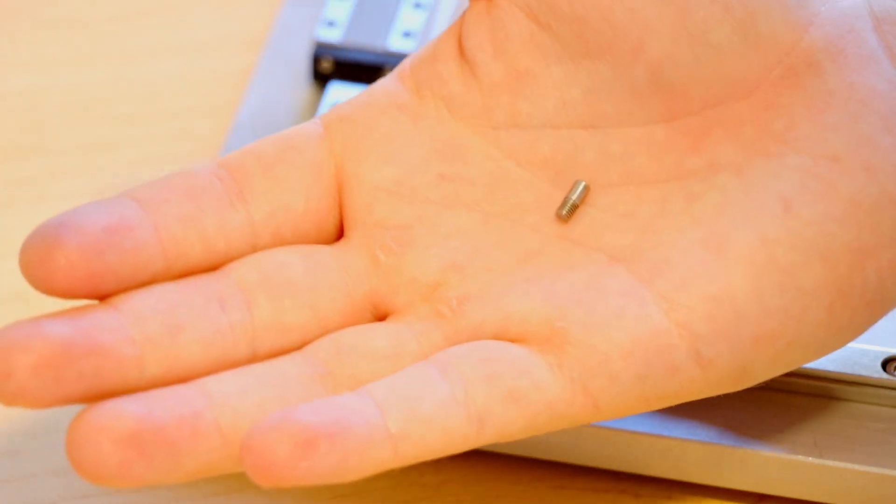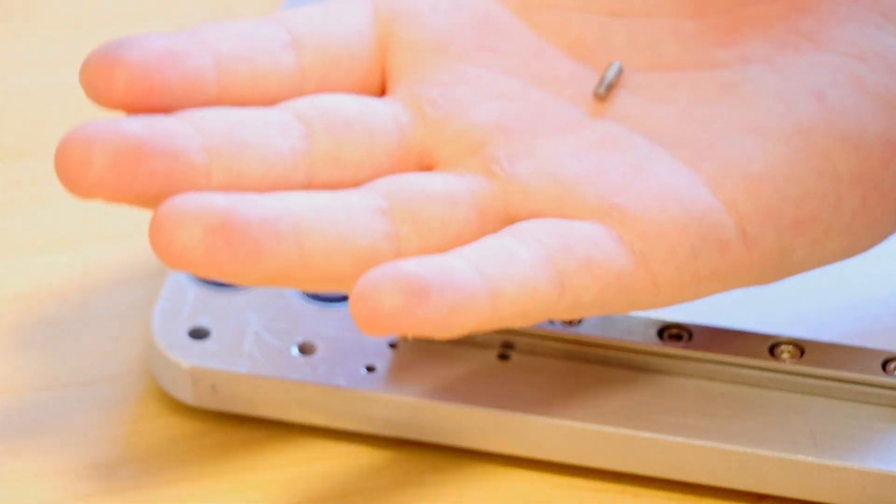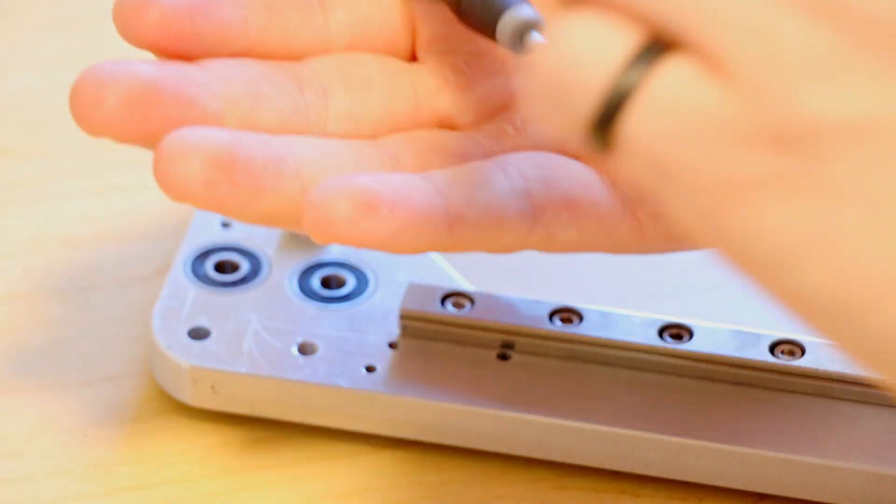Now I'm going to install the end stops for the rails which are these little threaded pins.